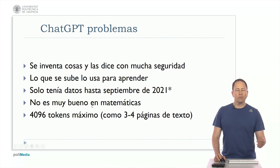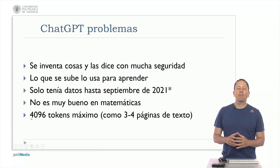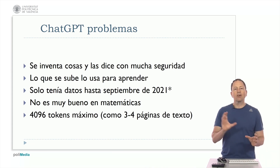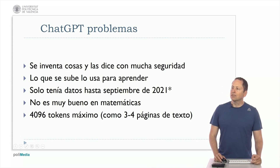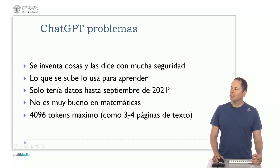As of September 2021, it only has data until then. It's also not very good with mathematics — you can ask it to solve a problem and it will respond as if it can, but it's possible it might make a mistake. Another significant limitation is that it works with a maximum number of words, specifically 4096 tokens, distributed between what you input in the prompt and what it returns. Considering that a word in Spanish is roughly 1 to 1.5 tokens, we could be talking about around 3000 words — about eight or nine pages of text in total, resulting in about three or four pages of output. If it exceeds that, it probably won't work.